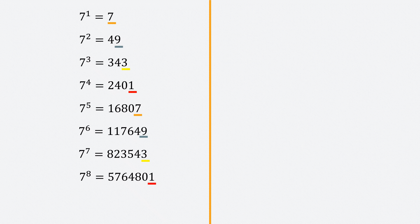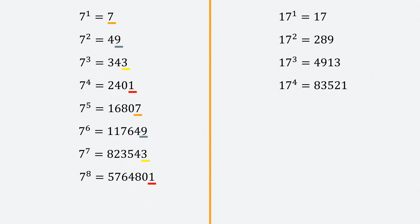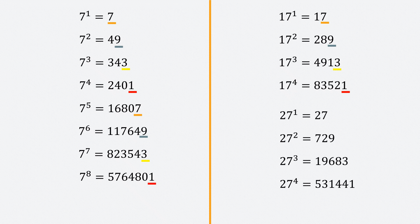You only need to look at the units place to determine the unit digit of a power. Once a number ends in 7, it will follow that same pattern. Let's check 17 — we can notice the same 7, 9, 3, 1 pattern. 17 to the power 1 is 17 (unit digit 7), 17 squared is 289 (unit digit 9), 17 cubed is 4913 (unit digit 3), 17 to the power 4 is 83521 (unit digit 1). This same pattern appears for all numbers ending in 7, such as 147. So no matter what, 17 follows that same cycle.